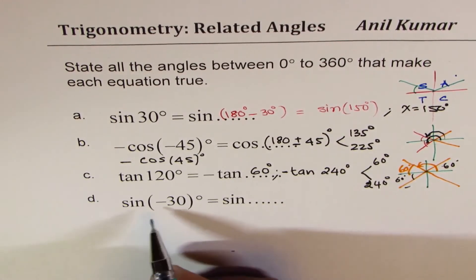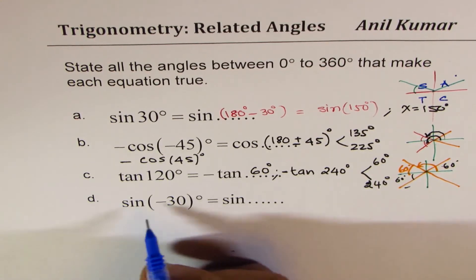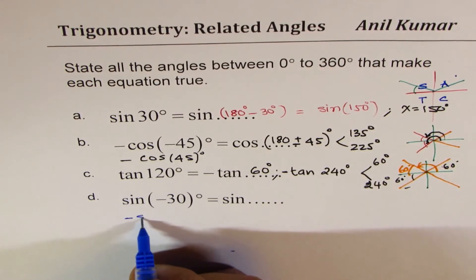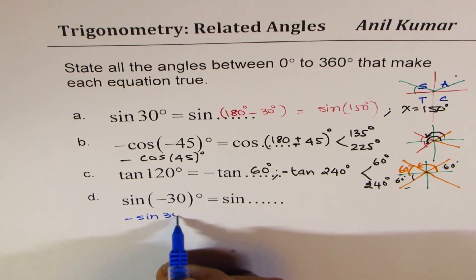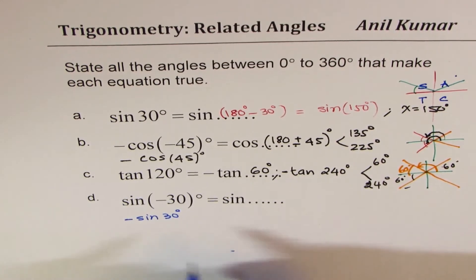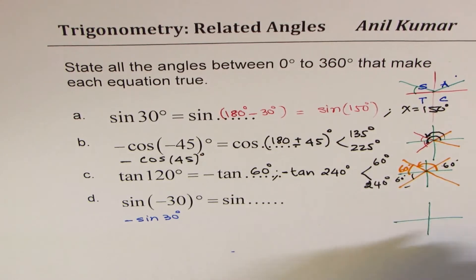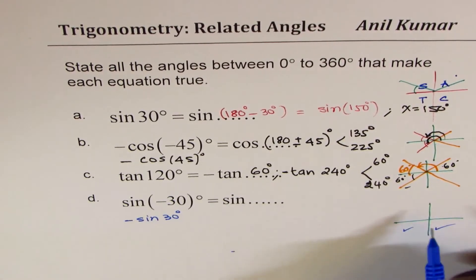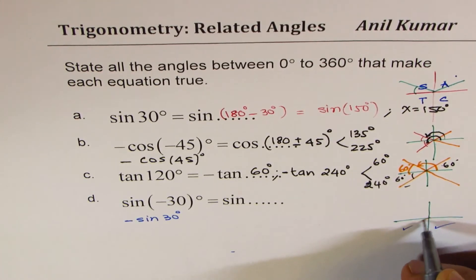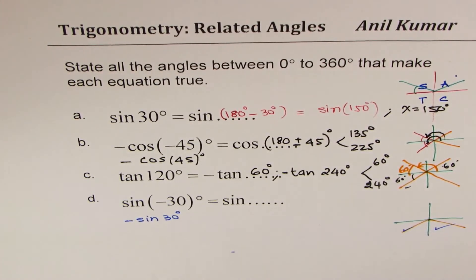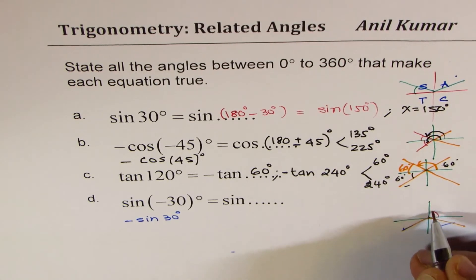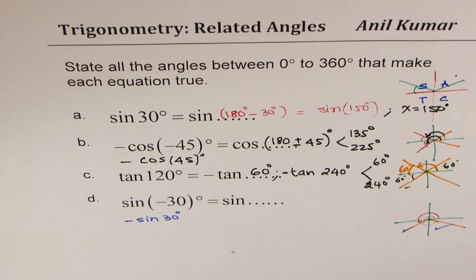We are looking for sine of minus 30. Sine of minus 30 is minus sine 30. So we are looking for negative answer. When is sine negative? Sine is negative in quadrant 3 and 4, with an acute angle of 30 degrees. So that is the terminal arm.